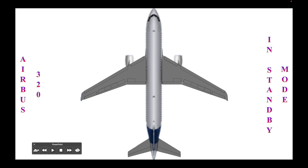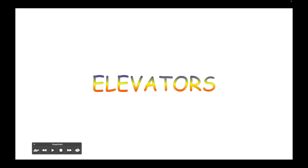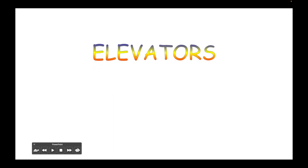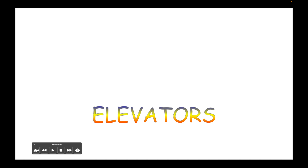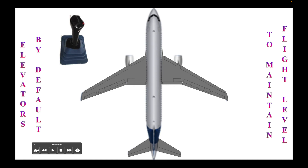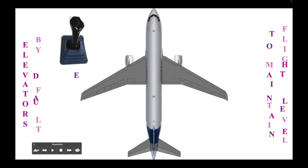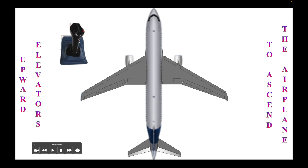By default, the Airbus 320 plane has its wings and tails flat, with none of the elements being used. One of the primary flight controls of an airplane is the elevator, which makes the airplane go up or go down. These are horizontal elements that adjust the flight level of the airplane. The pilot makes the airplane go up by pulling the side stick backward towards him.